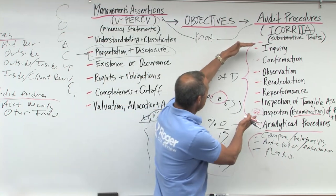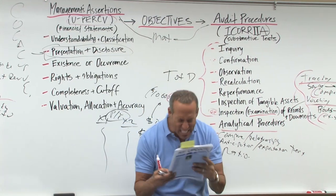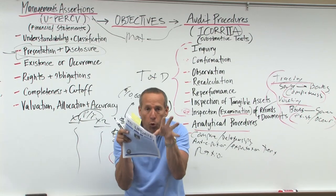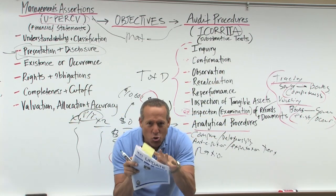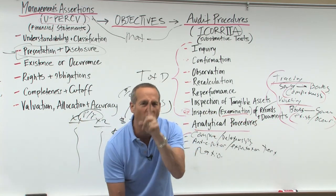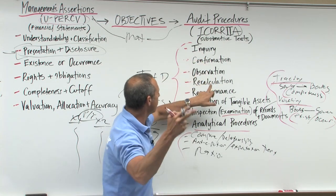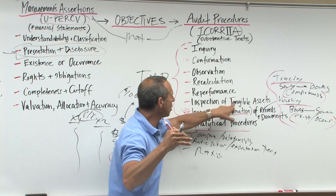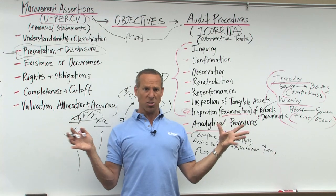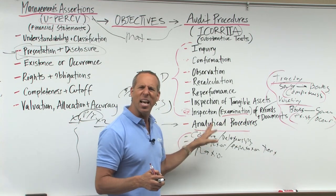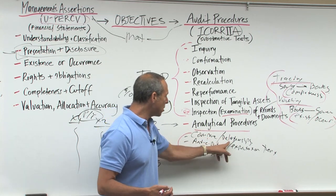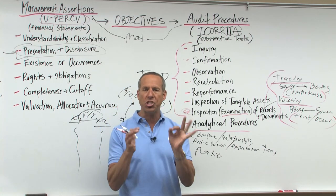This is called test of details — when you're looking at the detail, the problem is you can't see the forest for the trees. When you're in the detail of the trees, you ask questions, confirm, observe, recalculate, re-perform, look at the document and assets on a single transaction. But when you step back at the whole account balance, you ask: does this make sense? Does this change seem reasonable? That's comparing — that is relationships. So comparison, relationships, anticipation, expectation, ratio analysis.